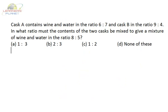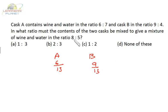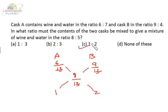Try this problem on your own — it is quite similar to the previous two. Cask A contains wine and water in the ratio 6 is to 7, and cask B in the ratio 9 is to 4. Taking the wine fraction: in cask A, wine is 6 by 13; in cask B, wine is 9 by 13. In the final mixture, wine should be 8 by 13. All the 13s cancel, and the ratio is 1 is to 2. I hope your answer matches mine.